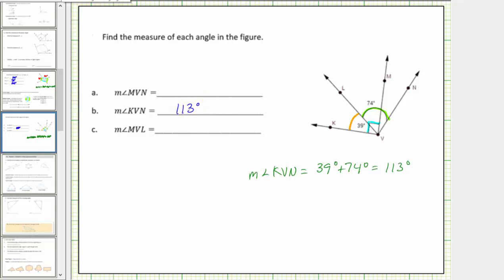Next, let's find the measure of angle MVL. Notice angle MVL is this angle here. If we focus on the right angle KVM, notice how this tells us that angle MVL and angle LVK are complementary, which means the sum of their measures must equal 90 degrees. Therefore, the measure of angle MVL must equal 90 degrees minus 39 degrees.